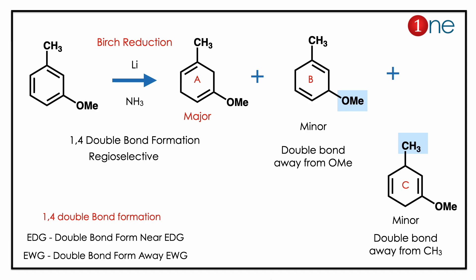Looking at lithium and liquid ammonia, you should recognize this is a Birch reduction. Normally, Birch reduction of benzene gives a 1,4-diene. Here there are only three possibilities: A, B, and C. A is the major product — the reason relates to double bond formation.